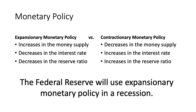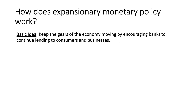Just as there are two types of fiscal policies, there are also two types of monetary policies: expansionary and contractionary. Expansionary monetary policies will increase GDP, and contractionary monetary policies will do the opposite. In a recession, the Federal Reserve will use expansionary monetary policy. The basic idea is that we want to keep the gears of the economy moving by encouraging banks to continue to lend to consumers and businesses. It is likely that if some businesses have to close for a while, they may be late on their payments, and we want to make sure that banks have enough cash to continue operating and support these businesses.